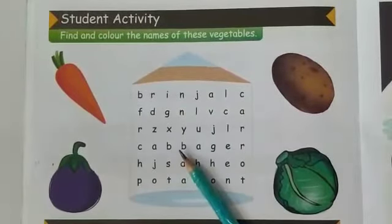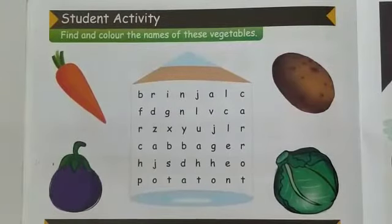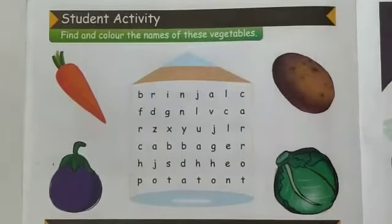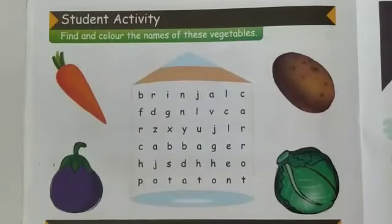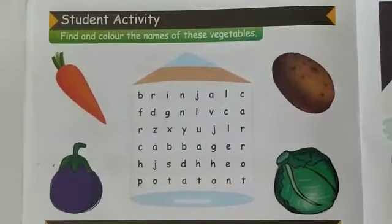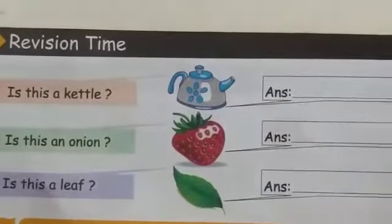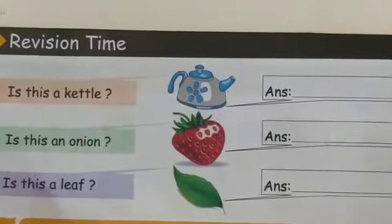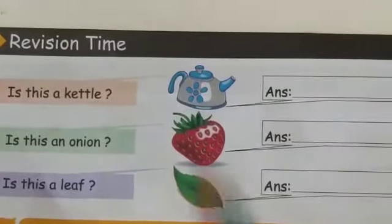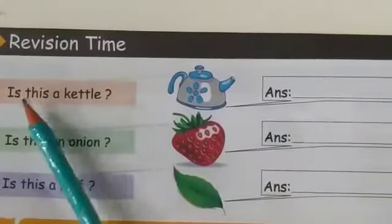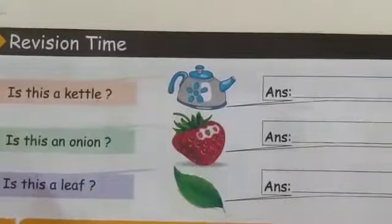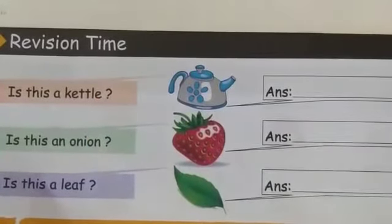Do your work neat and clean and don't forget to learn it by heart. These are very important, so learn them first and then write them in your neat notebook. Now let's see what we are going to learn next. The next activity is a student activity where you are going to find and color the names of vegetables. Here we have carrots, brinjal, potato, and cabbage.